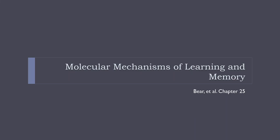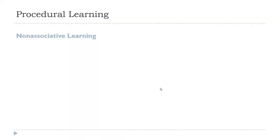The last topic we'll cover is the molecular mechanisms of learning and memory. This will be a brief overview, since there's far more here than we could cover in even one semester. We'll be talking about memory, specifically procedural memory — for humans, that means the types of memories we don't have explicit awareness of. There are different types to discuss.